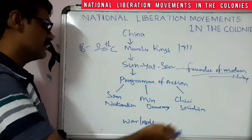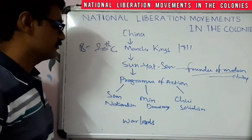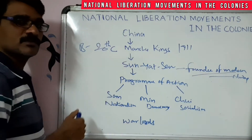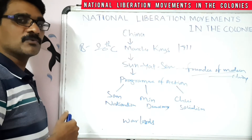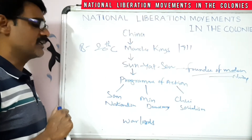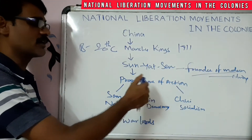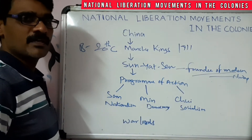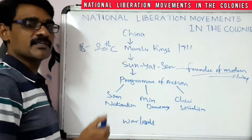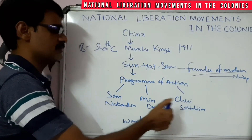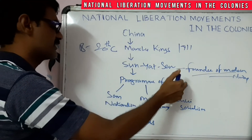In the program of action, he designed three principles called San Min Chui. In Chinese, 'San' means nationalism, 'Min' means democracy, and 'Chui' means socialism. Nationalism meant overthrow of the Chinese dynasty and sending the imperial countries out of China. Democracy meant making China a republic government. Socialism meant controlling the industries and redistribution of land among landless laborers through land reforms. These three — nationalism, democracy, and socialism — are the three main principles of Sun Yat-sen's program of action.